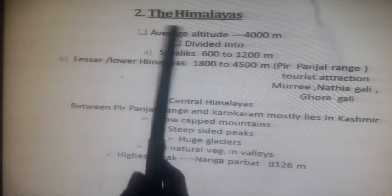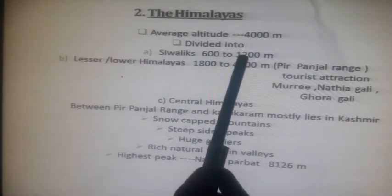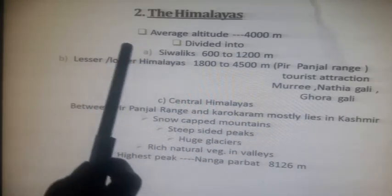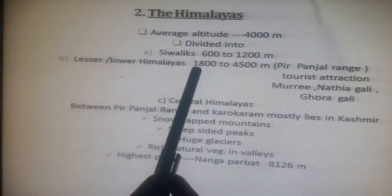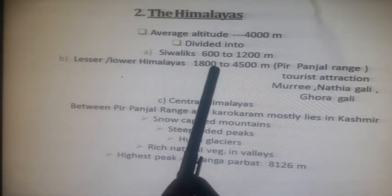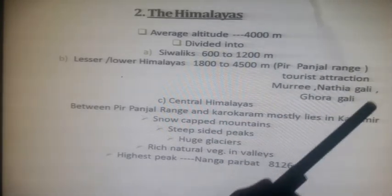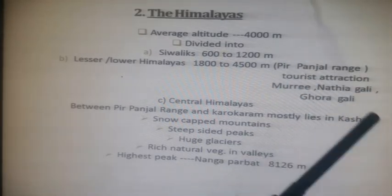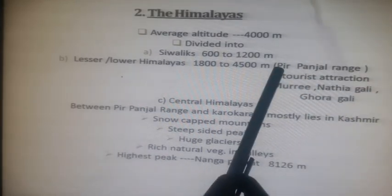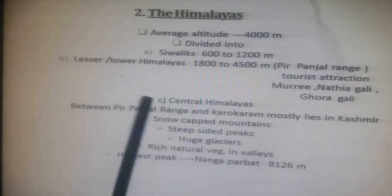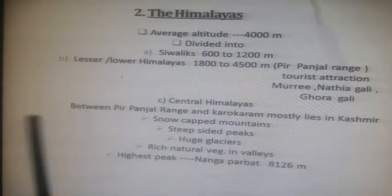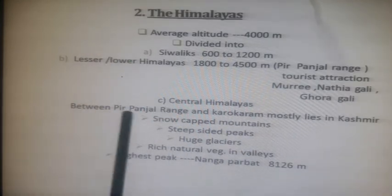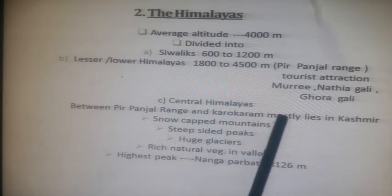The average height of the mountains in the Siwaliks is 600 to 1200 meters. The lesser and lower Himalayas extend to 1800 to 4500 meters; these mountains are a great tourist attraction, and Murree, Nathia Gali, and Gora Gali are located in this range, also known as the Pirpanjal range. The central Himalayas lie between the Pirpanjal range and the Karakoram range.